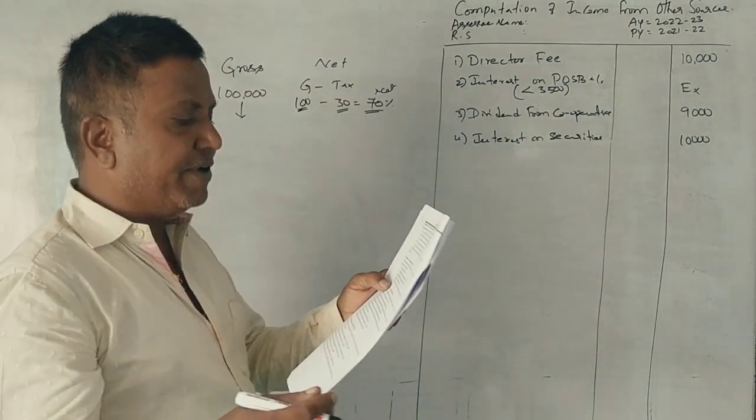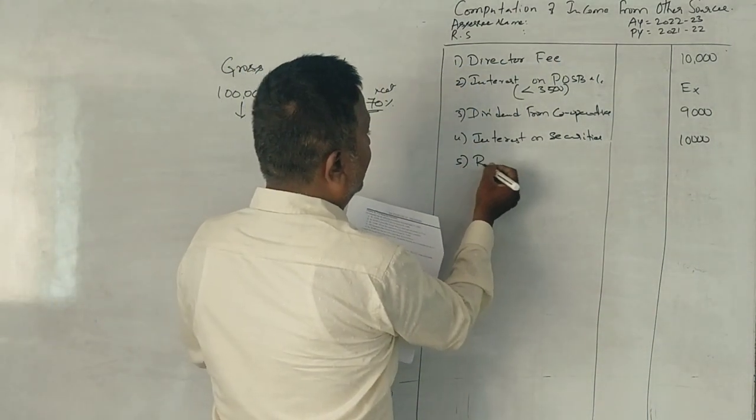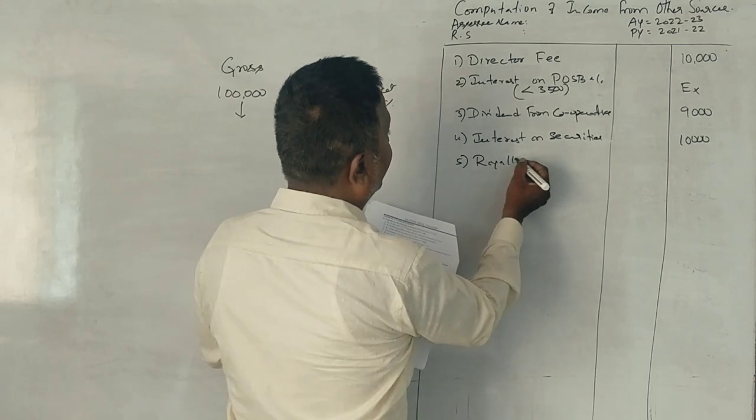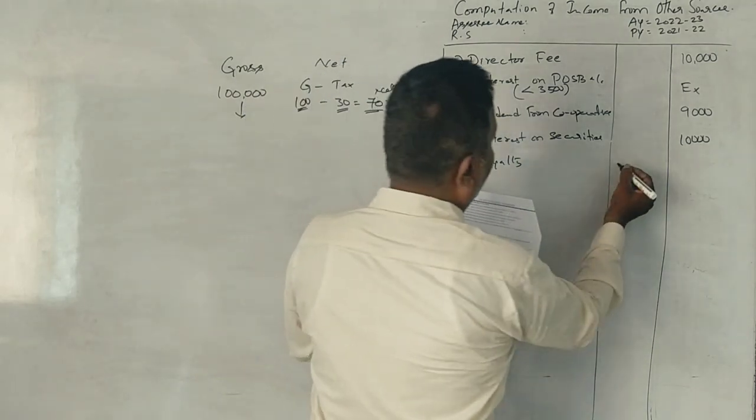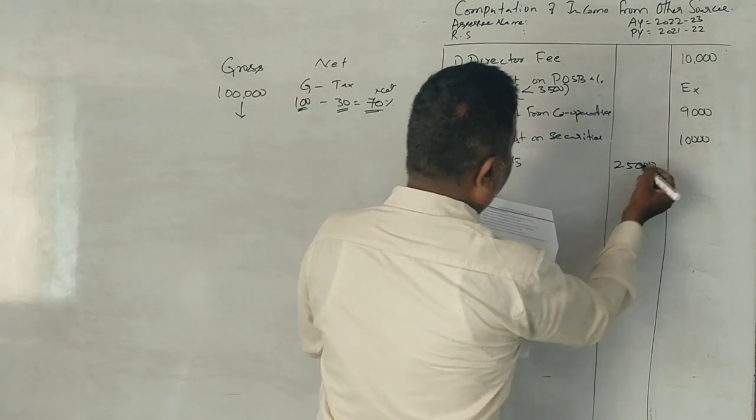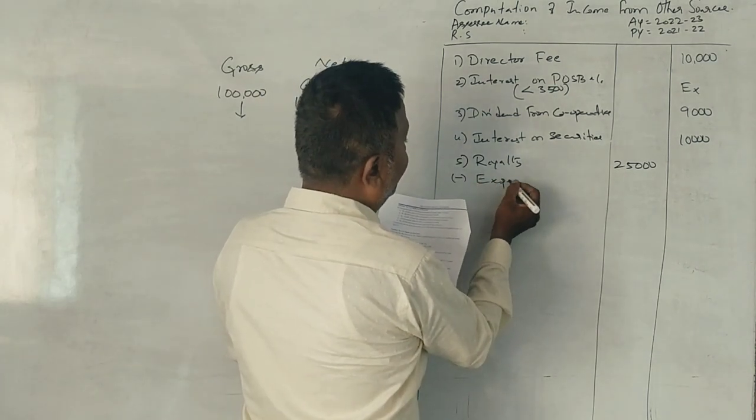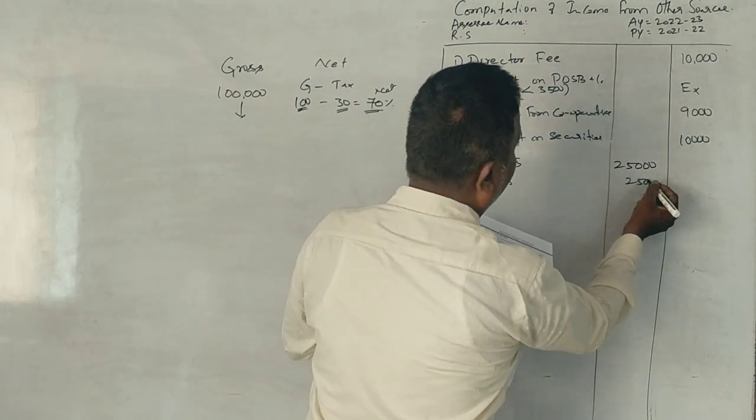Royalty from books written. How much you received? How much you spent for expenses? 2,500. 22,500.